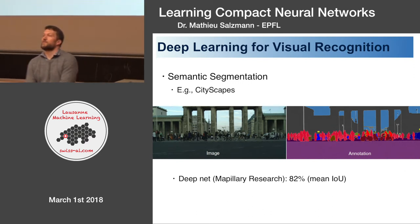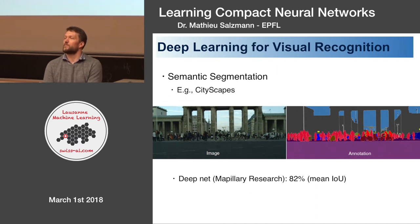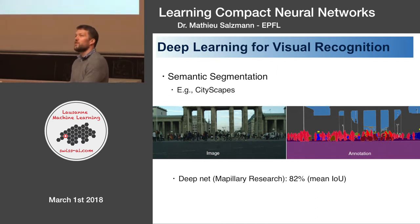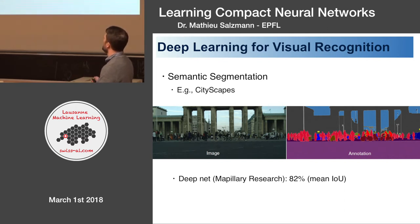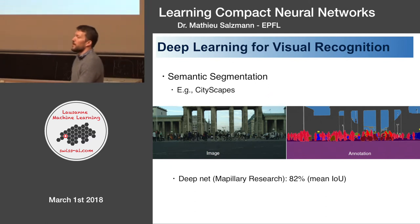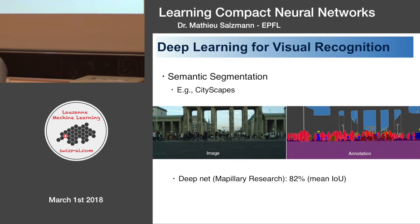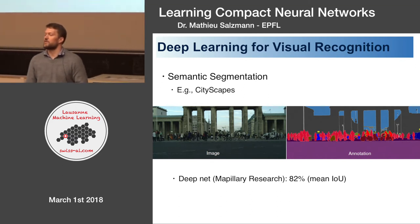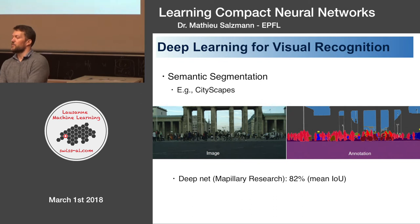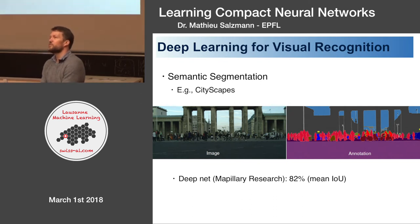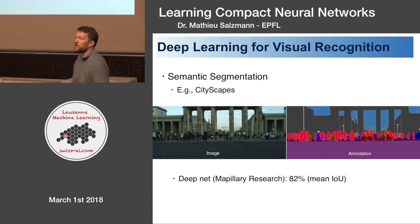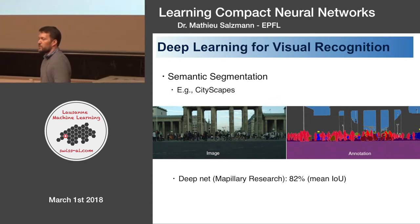Another problem is semantic segmentation. Here I'm showing an example from the Cityscapes dataset. You have one image and the goal is to assign one label to every pixel in that image — the ground in purple, the sky in blue, etc. There's been huge progress based on deep networks, and the current state of the art is by a company called Mapillary, whose research department has reached something like 82% intersection over union, meaning essentially 82% of the pixels are correctly labeled.